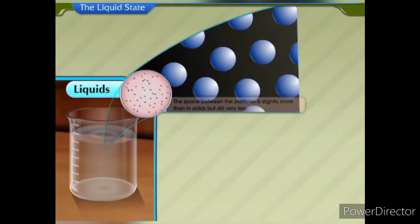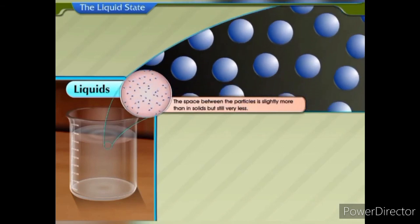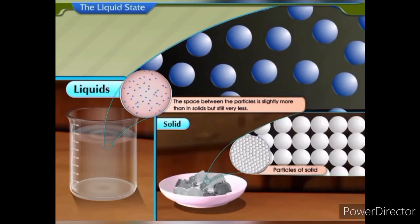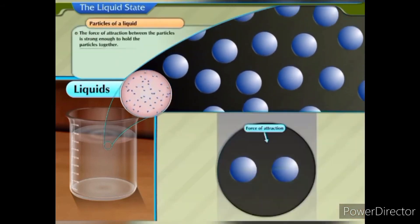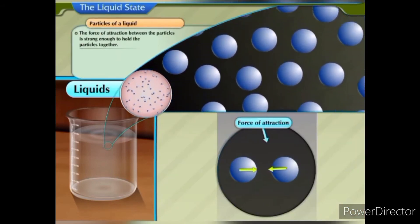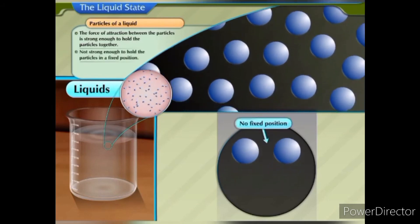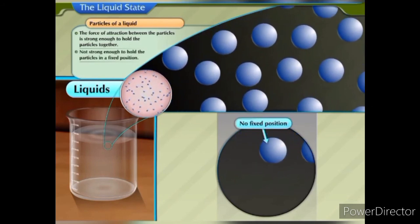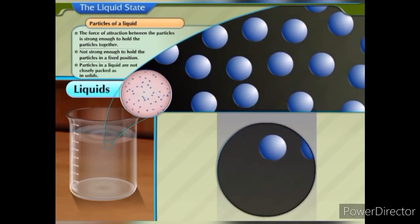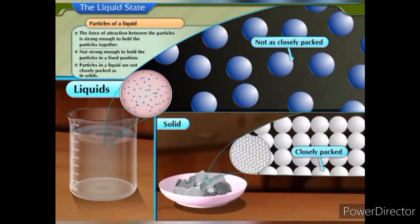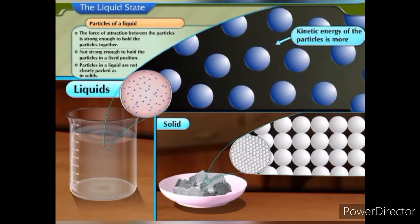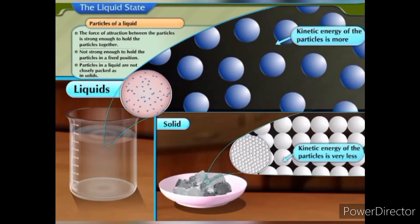In liquids, the space between the particles is slightly more than in solids, but still very less. The force of attraction between the particles is strong enough to hold them together, but not strong enough to hold them in a fixed position. Thus, particles in a liquid are not as closely packed as in solids. The kinetic energy of the particles is more than that of solids.